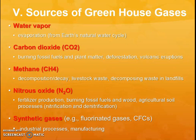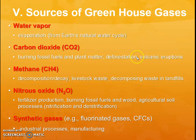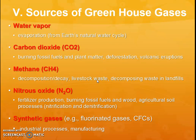Let's go through each GHG individually. Water vapor gets into the atmosphere through evaporation, warms the atmosphere, and makes it even hotter — think about how the air feels hotter on a humid day. Carbon dioxide gets into the atmosphere from burning fossil fuels, burning biomass through deforestation, and volcanic eruptions. Methane (CH4) shows up during decomposition, comes out of bacteria, manure, cow flatulence, landfills, and is a big component of natural gas — so burning natural gas releases a lot of methane.